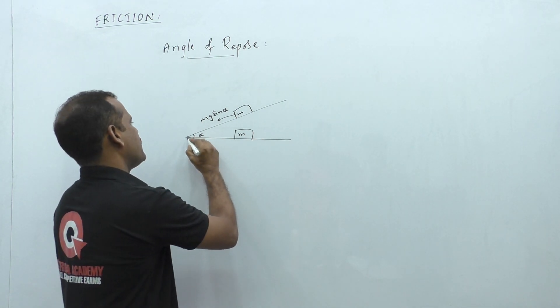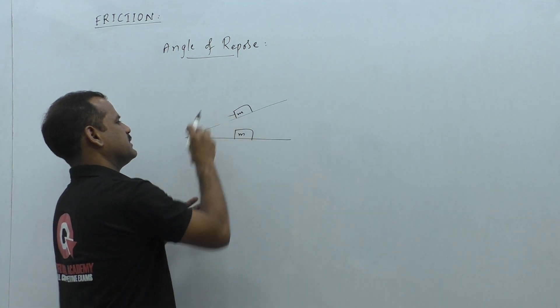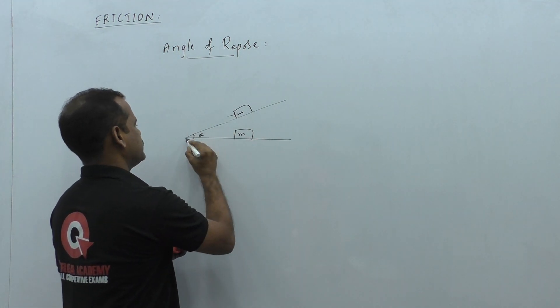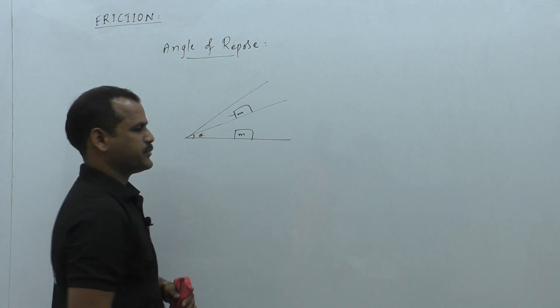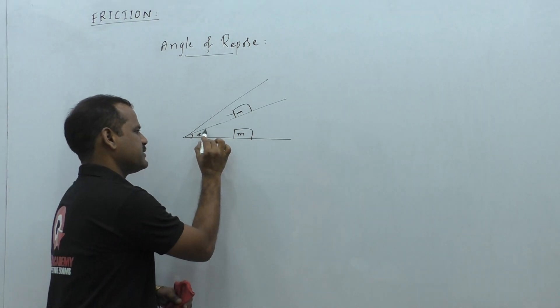If this inclined plane is further increased at the angle here, assume that this is the plane now. That means we are increasing this angle.